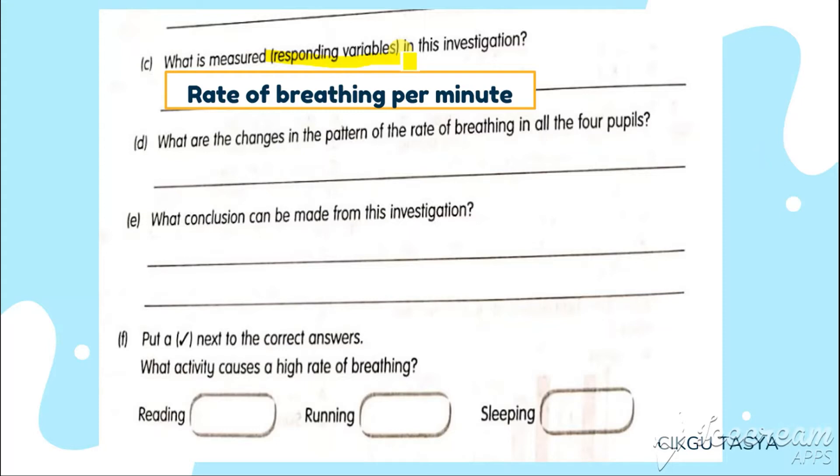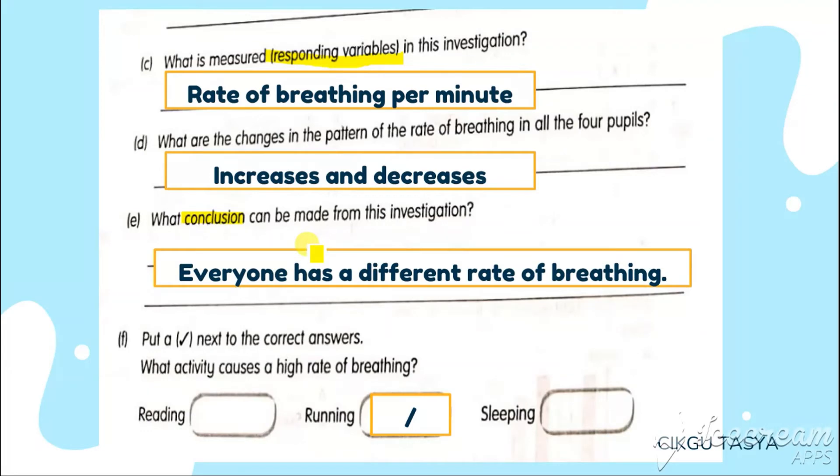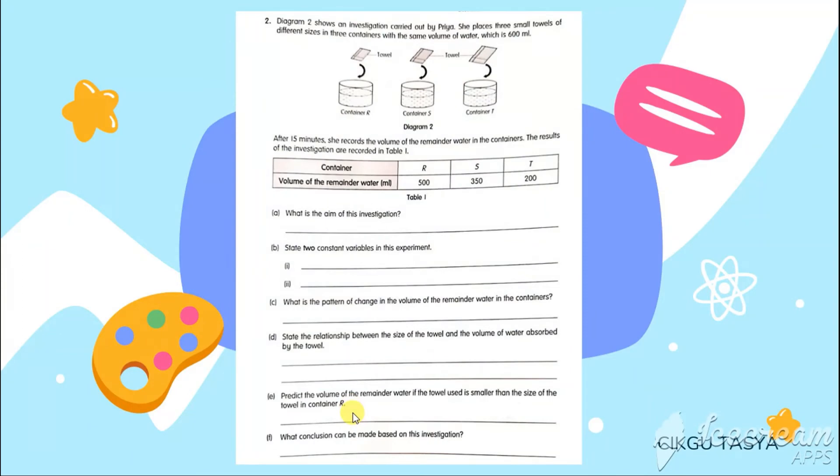The next one is conclusion that can be made for this experiment. Conclusion is something that you talk about hypothesis. Some of you can write the hypothesis back. Some of it you can have to make it generally. It's like a general conclusion that you get from the investigation. Everyone has a different rate of breathing. Next one, what activity causes a high rate of breathing? It will be reading, running, sleeping. Obviously, it will be running.